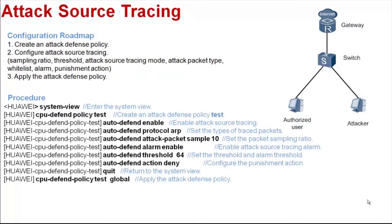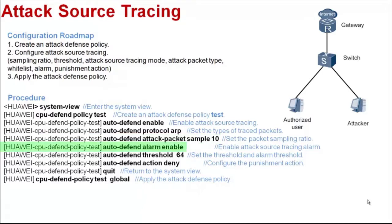Next, let's see the configuration procedure. Enter the system view. Create an attack defense policy named 'test'. Enable the attack source tracing function. Set the traced packet type, for example, ARP. Set the packet sampling rate — the sampling rate is set to 10 here, so the device captures one out of 10 packets for analysis. Enable the alarm function for attack source tracing.